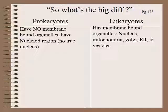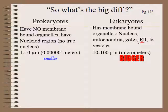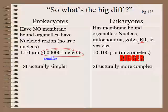Eukaryotes have membrane-bound organelles — things like the nucleus, mitochondria, Golgi apparatus, endoplasmic reticulum, and vesicles. Prokaryotes have no membrane-bound organelles; they have a nucleoid region where DNA hangs out, but it's not a true nucleus — no Golgi apparatus, no ER, nothing of that nature. Size-wise, eukaryotes range about 10 to 100 micrometers, while prokaryotes are only 1 to 10 micrometers. Structurally, eukaryotes are more complex because they simply have more stuff in them, while prokaryotes are structurally simpler.